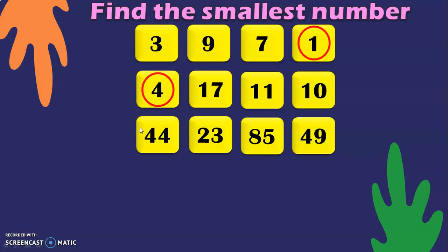In this example, we are given four two-digit numbers: 44, 23, 85, and 49. When you have two-digit numbers, first look at the tens place — this is rule number two. The tens digits are 4, 2, 8, and 4. Among these, 2 is the smallest. So with that, we can decide that 23 is the smallest number in this series. You can ask children to draw a circle or put a box around the answer.